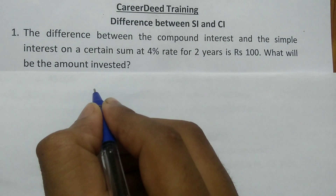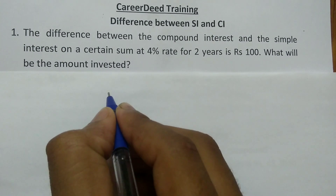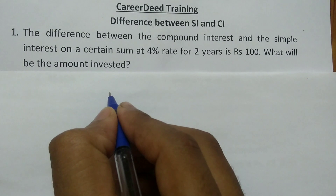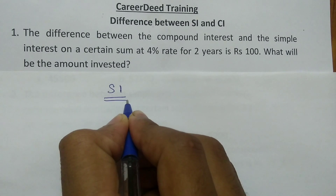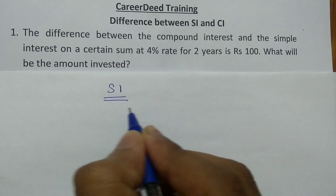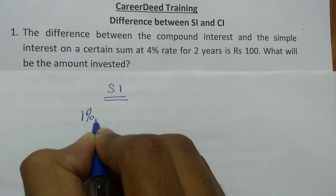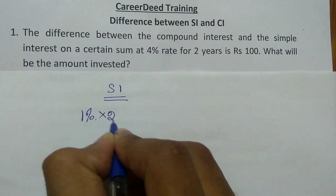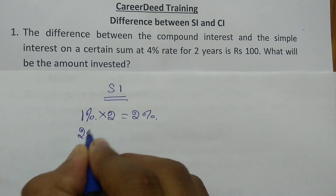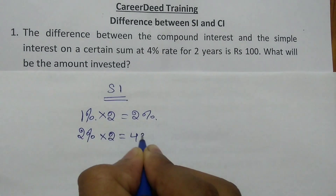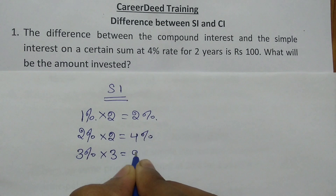Now listen to the question carefully. You are taking a loan of 100 rupees from a bank and the bank is asking you to pay 1% every year as simple interest. In the previous videos we clearly discussed that simple interest calculation is very simple. So for 1 year if it is 1%, for 2 years it is 1% × 2 = 2%. For 2% per annum, for 2 years it is 2 × 2 = 4%. For 3% per annum, for 3 years it is 3 × 3 = 9%.